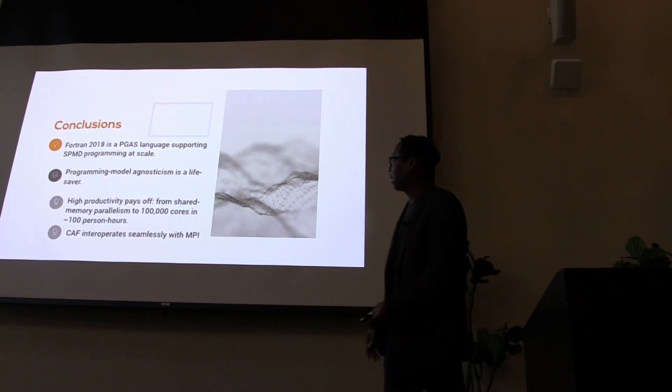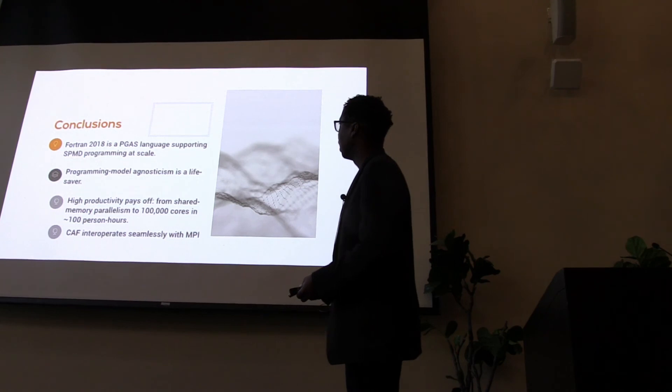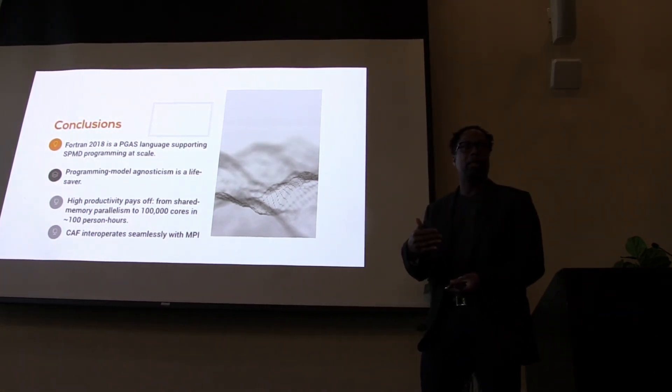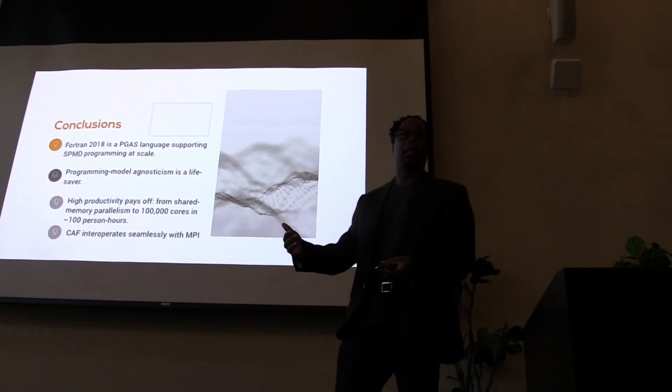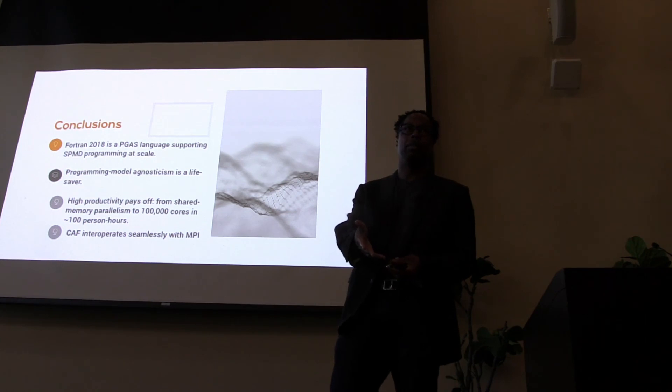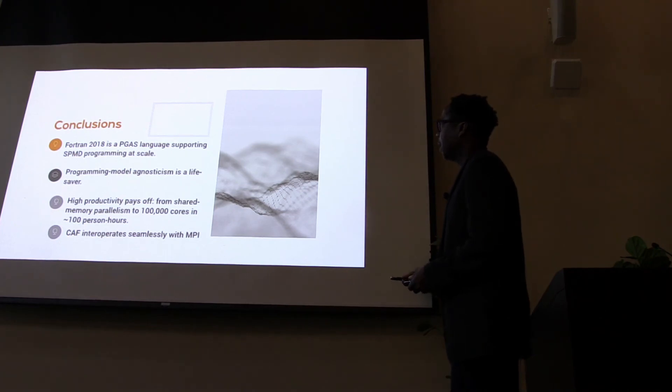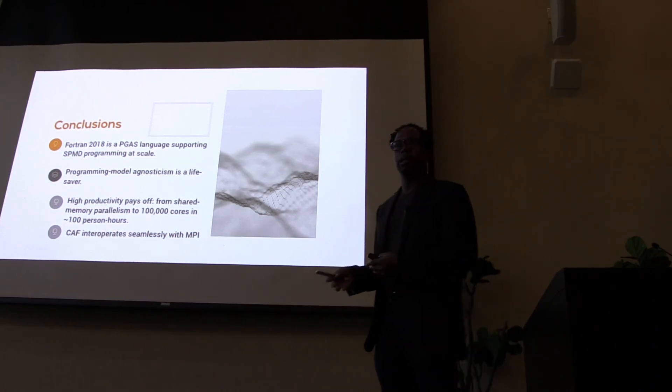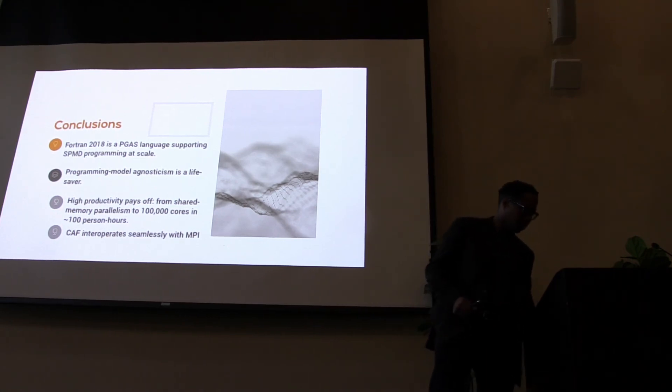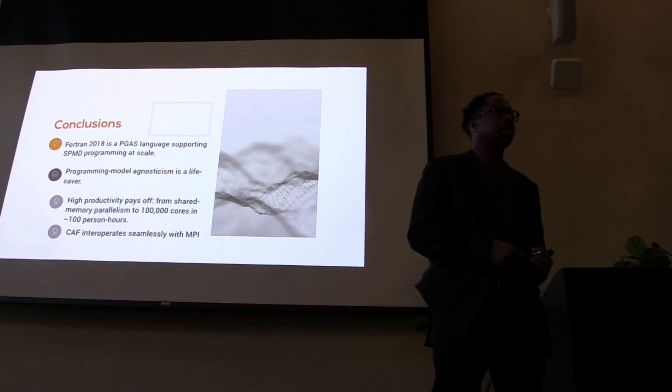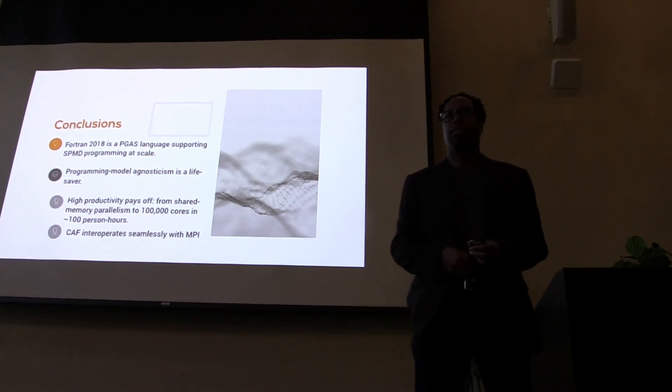Okay, so to wrap up, Fortran 2018 is a PGAS language now that supports SPMD parallel programming. It's really important that the parallel features in the language are programming model agnostic. We can support them with MPI, OpenSHMEM. We've also tried GASNet, RMC. High productivity really pays off. And also, we're able to interoperate with MPI. So it looks like I went two minutes over. Sorry about that. Should we skip questions and move on then? Well, any questions?